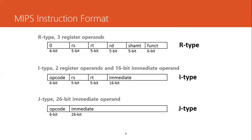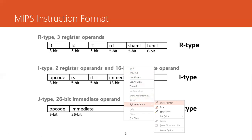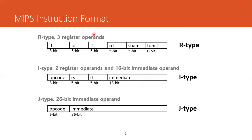If an instruction uses registers as its source and destination operands, the instruction is R-type. We have three register operands — two source and one destination — all are registers, so they are classified as R-type. I-type instructions contain at least one immediate source operand, which is why they are classified as I-type. J-type instructions have an opcode and a 26-bit immediate constant value, which is the effective address to which we want to jump, conditionally or unconditionally.